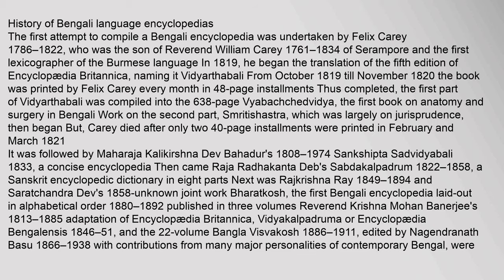It was followed by Maharaja Kalakrishna Dev Bahadar's (1808–1974) Sangshipta Sadhvidyabali (1833), a concise encyclopedia. Then came Raja Radhakanta Dev's Sabdakalpadram (1822–1858), a Sanskrit encyclopedic dictionary in eight parts. Next was Rai Krishna Ray (1849–1894) and Sarachandra Dev's joint work Bharatkash, the first Bengali encyclopedia laid out in alphabetical order (1880–1892), published in three volumes. Reverend Krishna Mohan Banerjee's (1813–1885) adaptation of Encyclopedia Britannica, Vidyakalpadrumah or Encyclopedia Bengalensis (1846–51), and the 22-volume Bangla Visvakish (1886–1911), edited by Najendranath Basu (1866–1938), were also published.